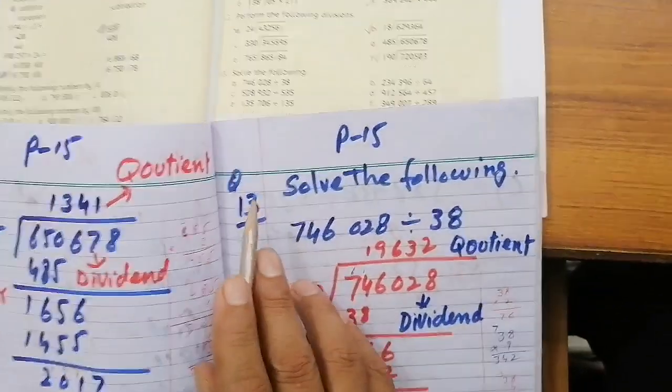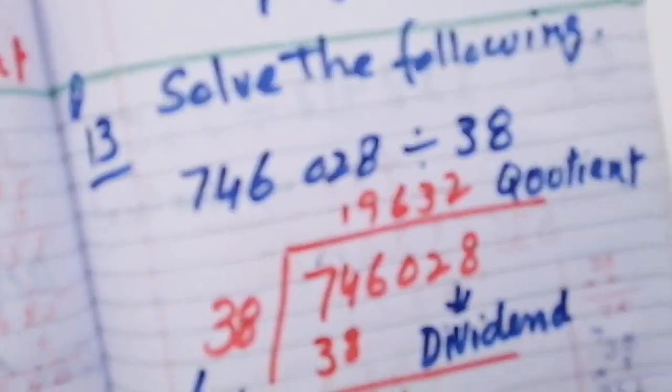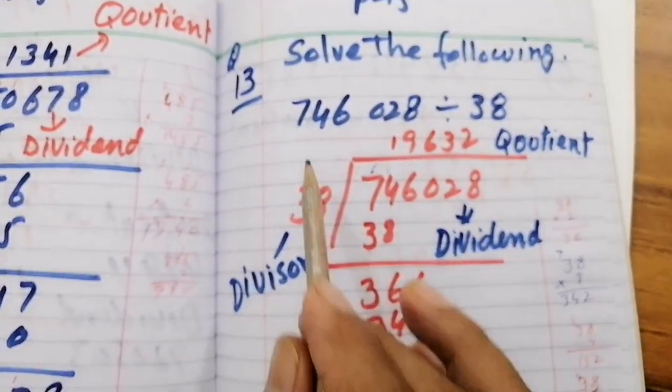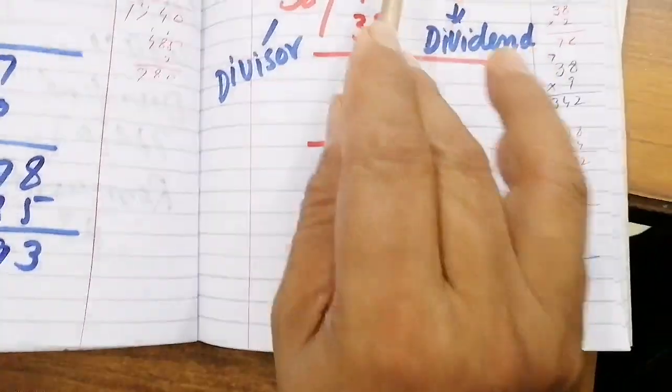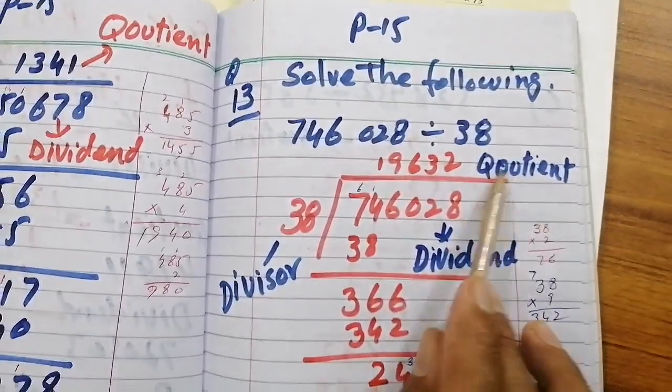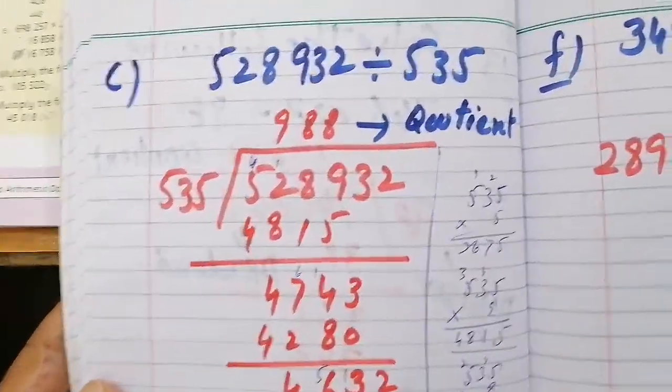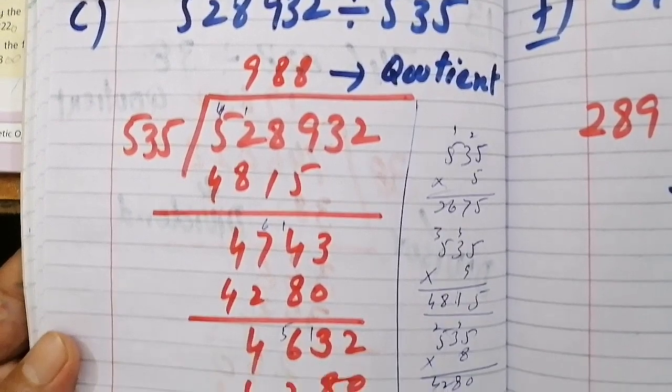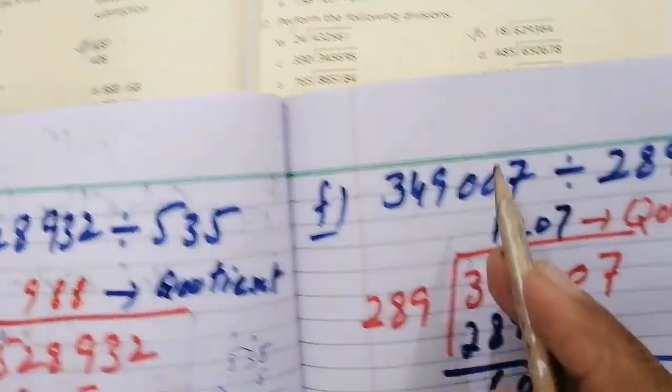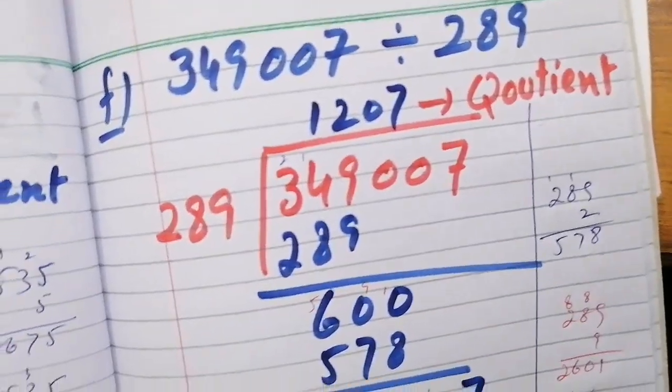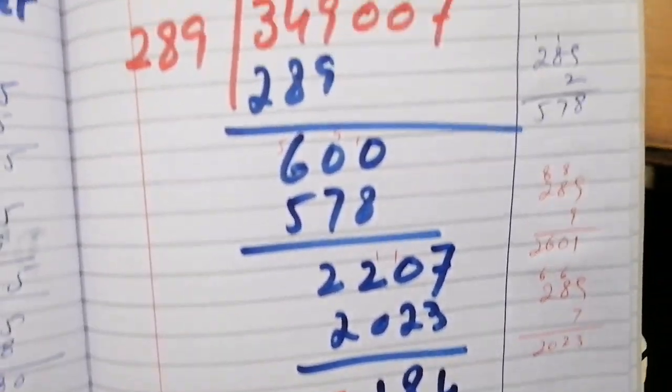Now we move to question number 13. That is also about division. This part is part D, you can see it with 38. We divide with the division method. We have also done the division part.